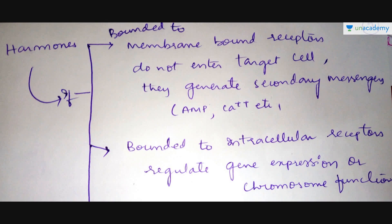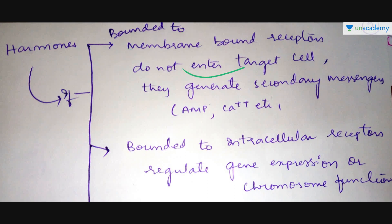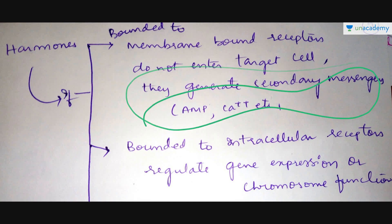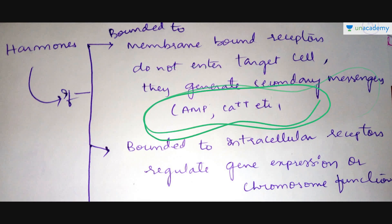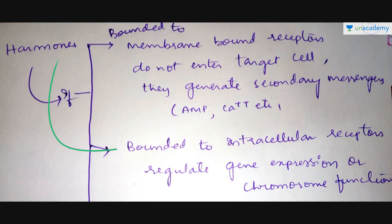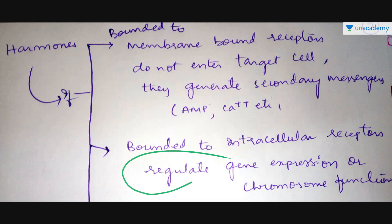If the hormone is bound to membrane-bound receptors, it does not enter the target cell — it only generates secondary messengers such as cAMP and calcium ions. If the hormones are bound to intracellular receptors, they help in regulating gene expression or chromosomal function.